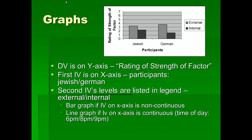Another topic is graphs. Some students don't know how to read a graph, so let me go over the basics. On the y-axis is the dependent variable. On the x-axis is the independent variable. We can look at this graph and see that the dependent variable is the rating of the strength of the factor. Since you know this rule, you can figure out the names of the DVs and IVs just by looking at a graph, and that's what's important.